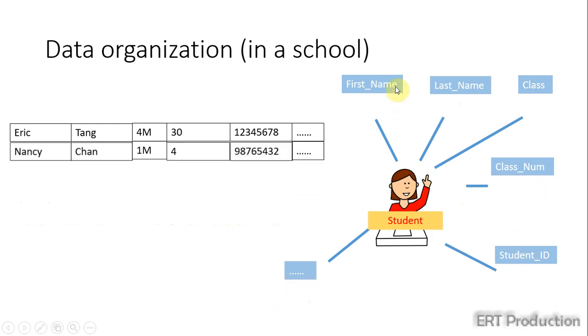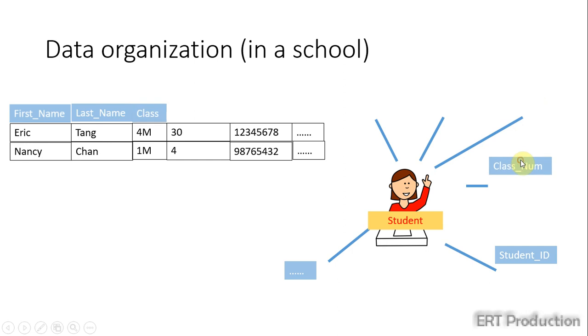All these horizontal rows and records put together with the heading of each property form a table. For this table, the table name is simply called student.